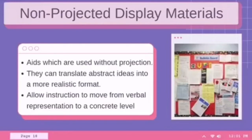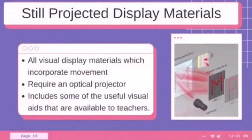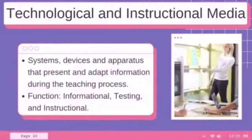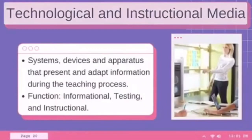The best examples of non-projected display materials are bulletin boards and blackboards. Still projected display materials refer to all visual display materials which incorporate movement and require an optical projector. They include some of the most useful visual aids available to teachers — using a projector in the classroom is the best example. Lastly, technological and instructional media are the systems, devices, and apparatus that present and adapt information during the teaching process. These have three functions: informational, testing, and instructional.